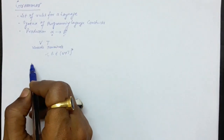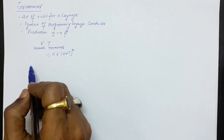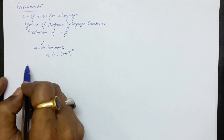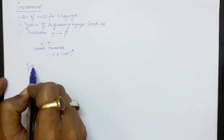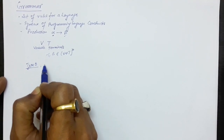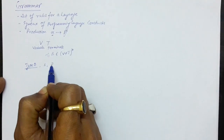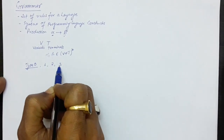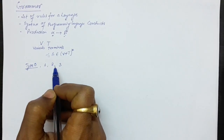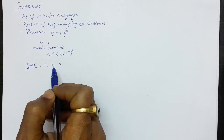There are some types of grammars defined for programming languages: type 0 grammar, type 1 grammar, type 2 grammar, and type 3 grammar. In this lecture we will try to differentiate between these types of grammars.